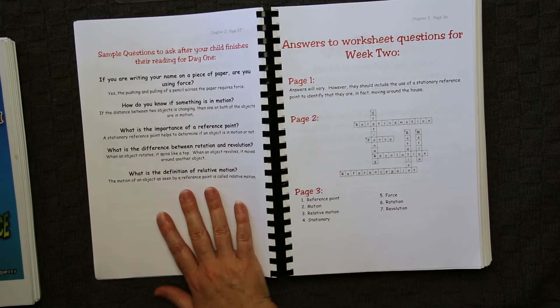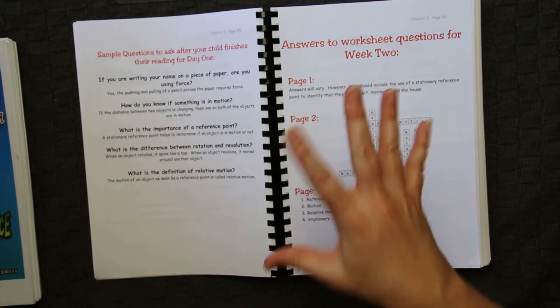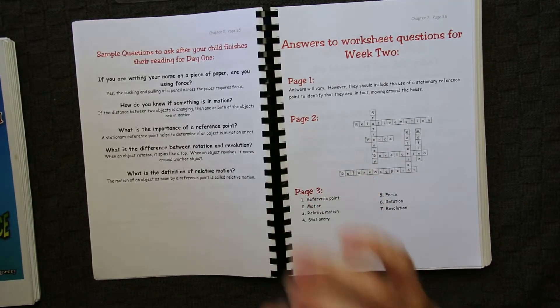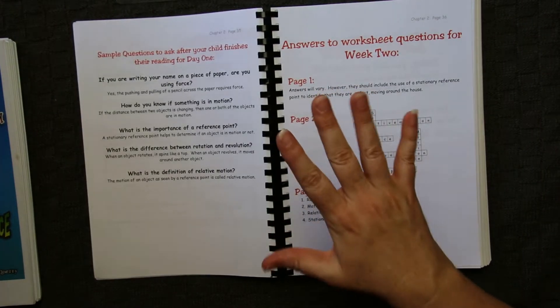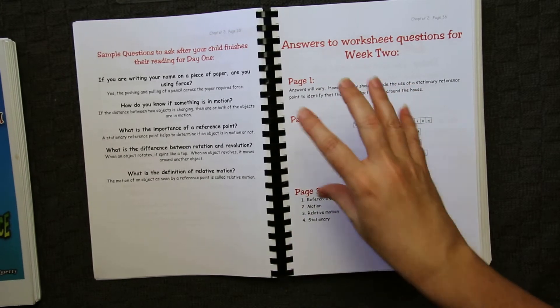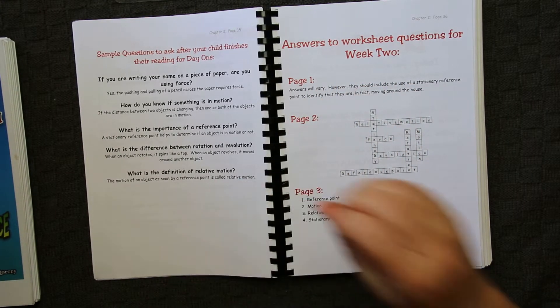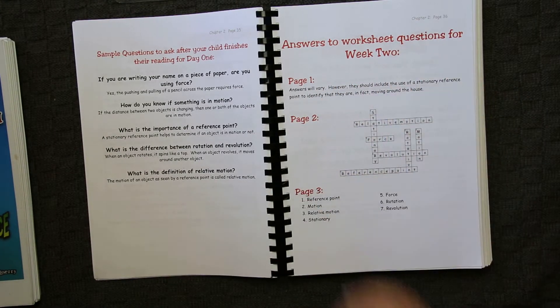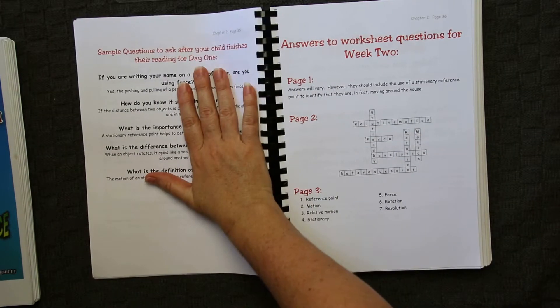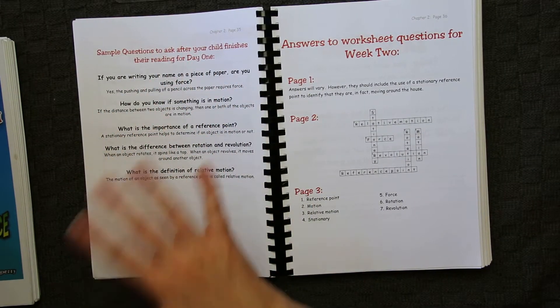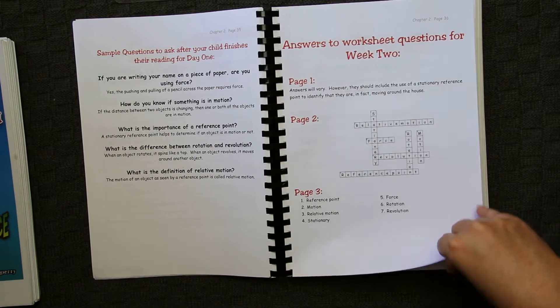The main definitions and main points that this particular lesson is looking at are then listed. You've got some discussion questions, which is really helpful when you get to topics that you may not be comfortable covering. And we have had this on several occasions in both the chemistry guide and the physical science guide, where we're so thankful to have these so that we can discuss this further with our children. You've got the answers to the worksheets.